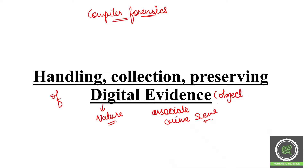If evidence is of a digital nature, that is digital evidence. Today we will cover: what is digital evidence, how to handle digital evidence, how to collect it when you process the crime scene, and how to preserve and secure it. These three — handling, collection, and preservation — are the important things we will cover in today's lecture.